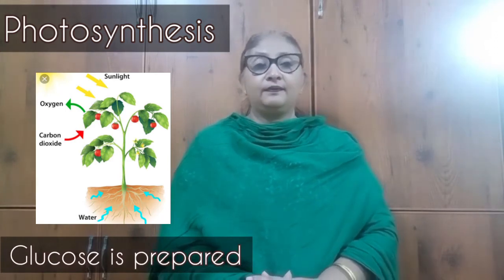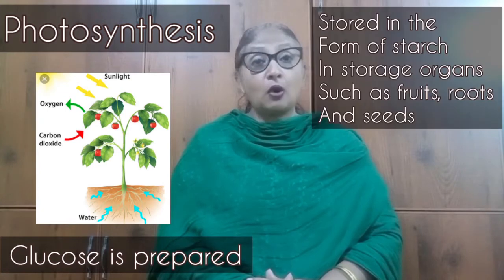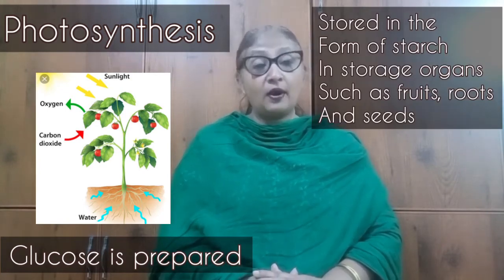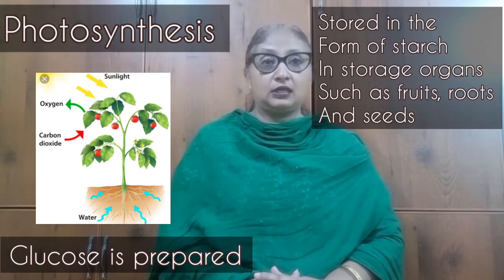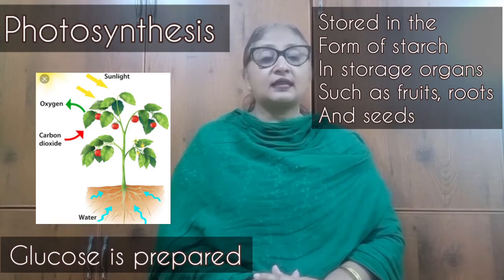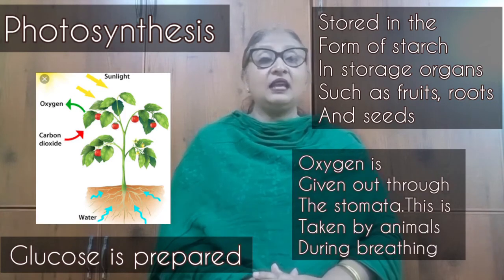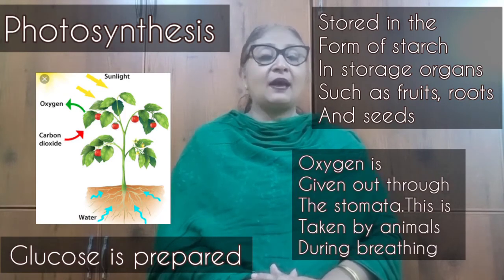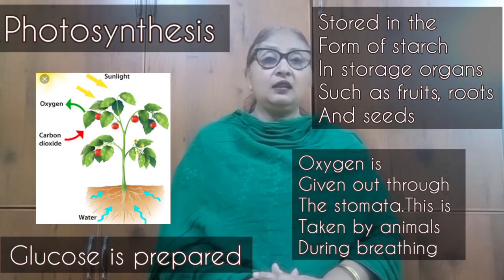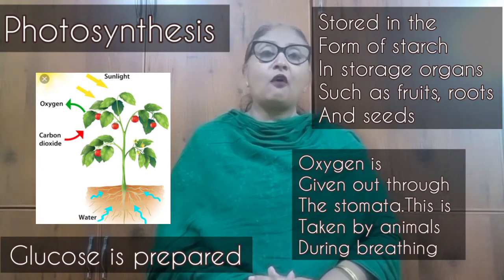Using sunlight, chlorophyll, carbon dioxide, water, and minerals, glucose is prepared. This glucose is stored in the form of starch in storage organs such as fruits, seeds, and roots. Oxygen is also emitted and is given out through the stomata back into the atmosphere. This oxygen is in turn utilized by the animals for breathing.